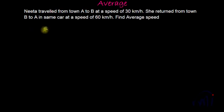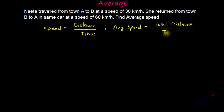So what is the formula of speed? Speed is equal to distance by time. And what is average speed? If I talk about average speed, average speed is equal to total distance traveled divided by total time taken.